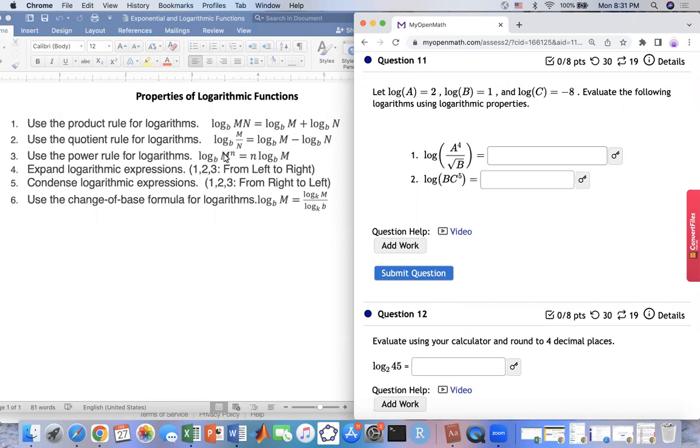And if you have log base b of m raised power n, you can kick number n in front and then you write that part. So the process from number one to three, all the three properties here, going from left to right, they call expand logarithmic expression. And if you apply backward, go from right to the left, they call condensed logarithmic expression. So depending on the question, sometimes we expand, sometimes we compress them.